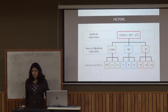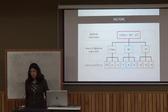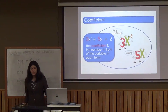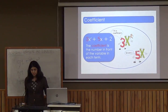This way we can factorize an algebraic expression, and this method is called the tree method. Now consider the expression 3x square plus 5x plus 2. The coefficient is the number in front of the variable in each term. Here, 3x square has coefficient 3, 5x has coefficient 5. The coefficient is always the number in front of the variable.